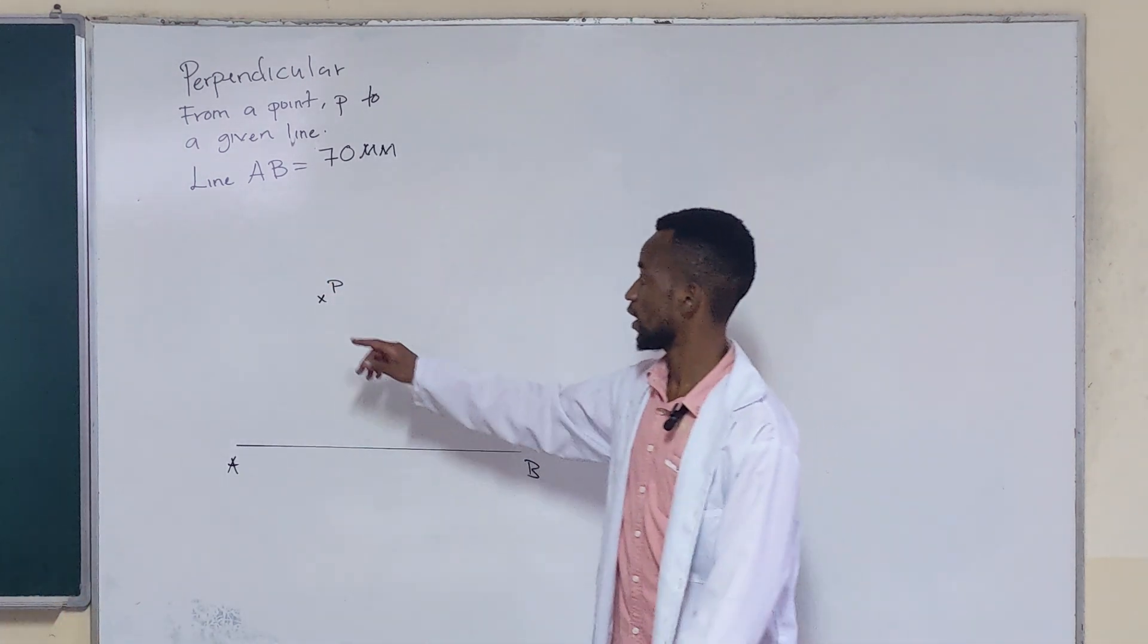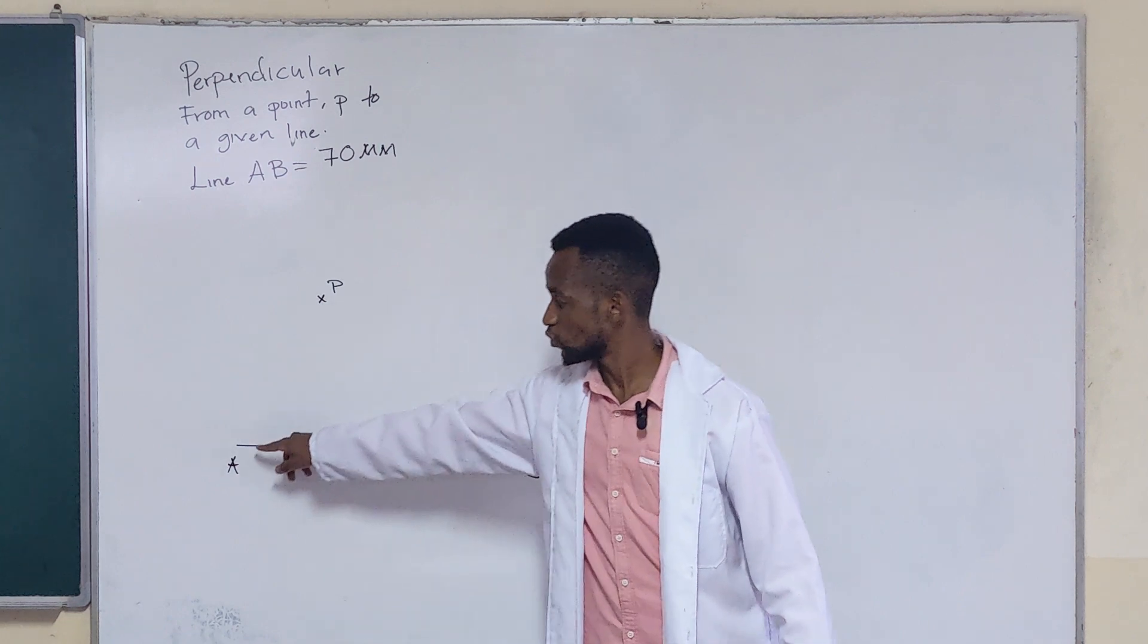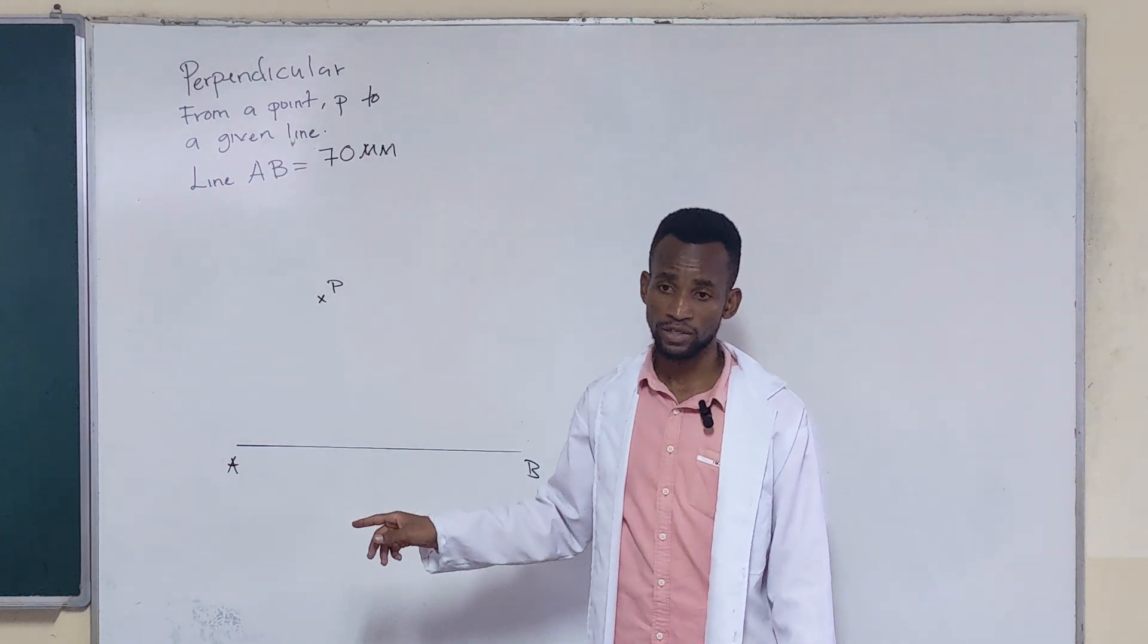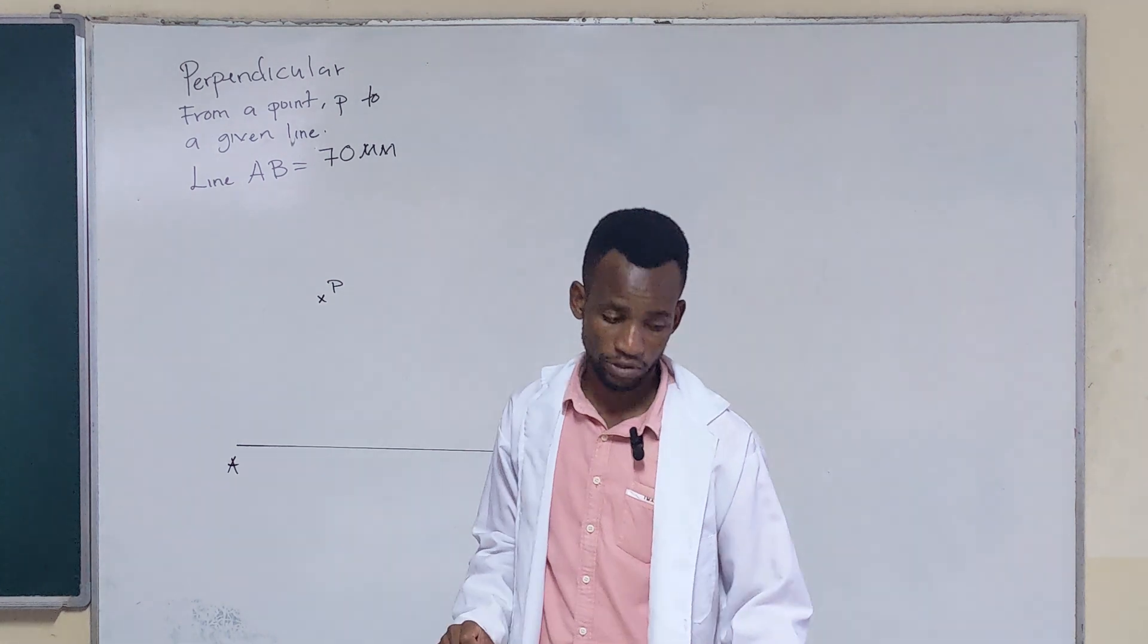So here we want to draw a line that will come from this point to meet with the given line FB at 90 degrees, or at perpendicular angle.